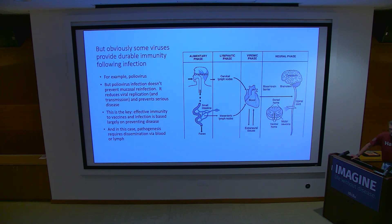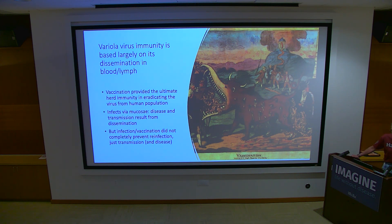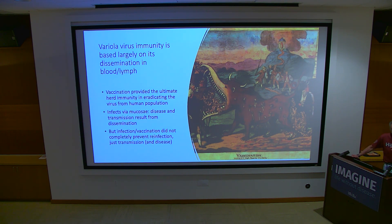Disease in the case of polio requires dissemination via blood or lymph. Another incredibly effective vaccine was smallpox — the only human virus completely eradicated by vaccination, the ultimate herd immunity. Smallpox spreads via the respiratory route, but disease and transmission require a blood-borne phase. Even with smallpox, vaccination does not prevent reinfection — you'd see antibody rises with no disease. This was common.